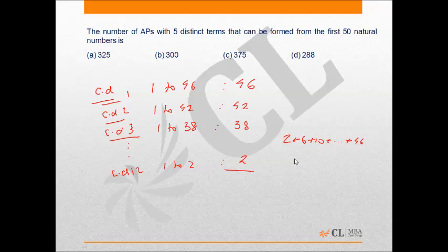Since N is going from 0 to 11, so 12 into A plus L by 2, that is 2 plus 46 by 2. 48 by 2 is 24. 24 into 12 is 288. Hence the sum of this AP is 288. Answer is option D.